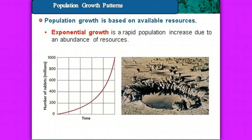Population growth is typically based on available resources. If an area has an abundant amount of resources, there can be what's called exponential growth — rapid population increase. We see increase, doubling, doubling over time, and that could go on forever. But think about it — on Earth, is it possible for populations to grow unlimited?